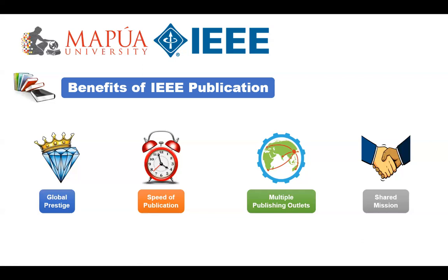IEEE offers visibility and discoverability for your research. Once accepted for publication, your IEEE article will be published in IEEE Explore, which is the premier source for technical content. IEEE Explore has over 5 million documents and provides over 8 million downloads each month. And IEEE is also the most cited publisher in U.S. and European new technology patents — with over 3 times more citations than any other publisher.